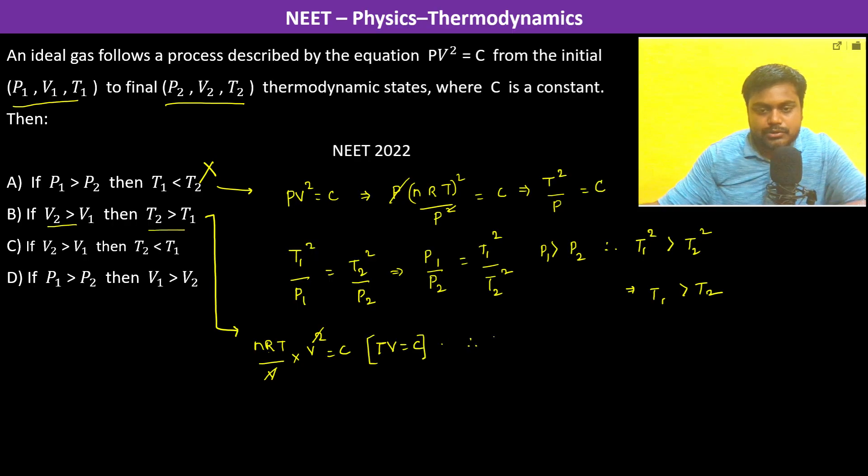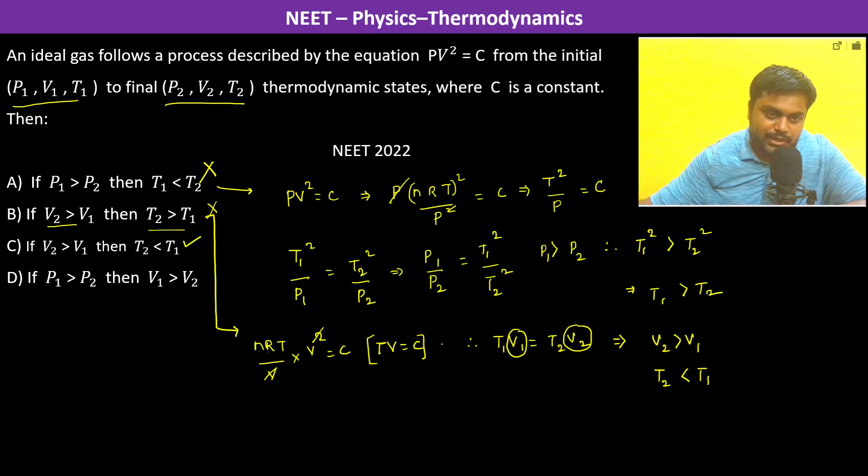Therefore, T1 V1 is equal to T2 V2. If V2 is greater than V1, then obviously T2 has to be less than T1 since the product has to be the same. V2 is greater than V1, T2 is greater than T1, no, T2 is less than, yes this is correct.